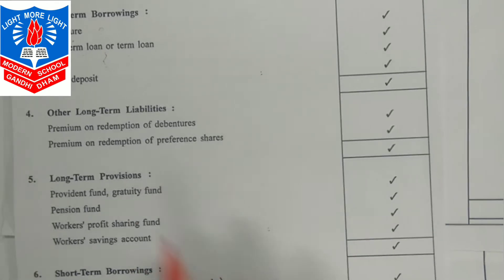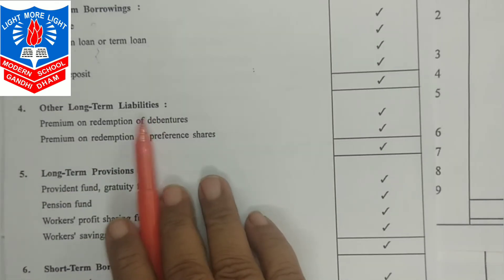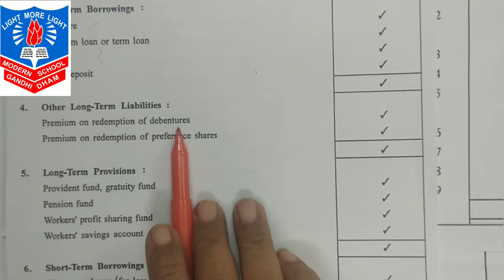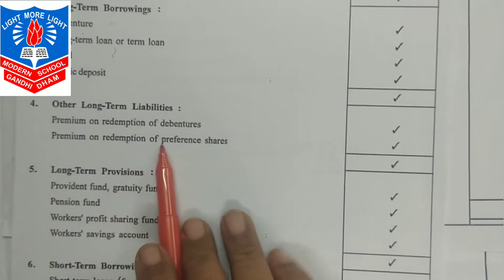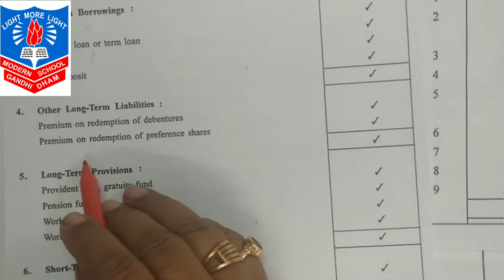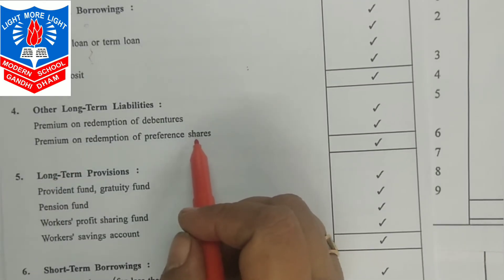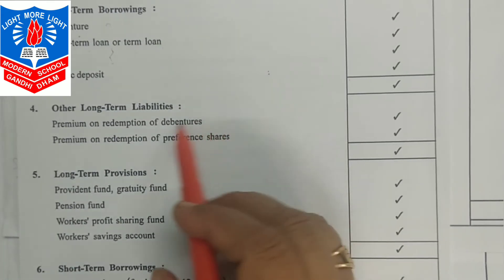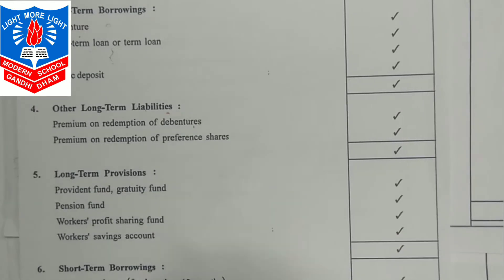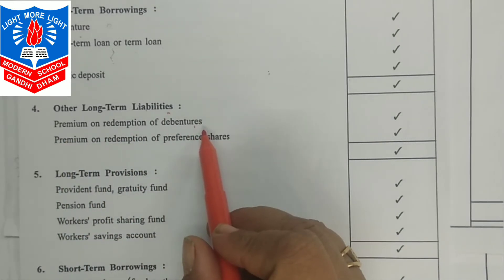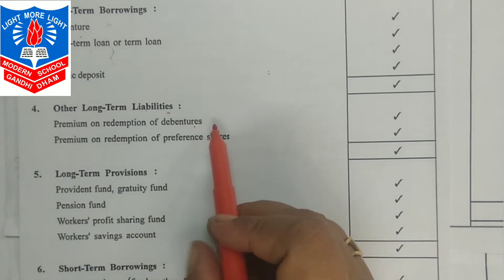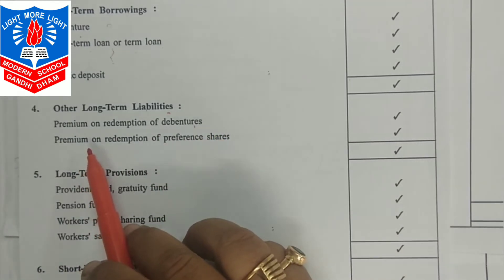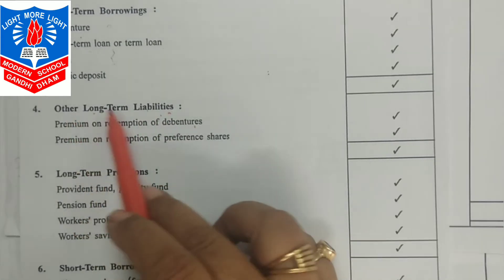Next is long-term liabilities — amounts still to be paid. This includes premium on redemption of debentures and premium on redemption of preference shares. These additional amounts we have to pay in future are our liabilities — reserved for when debentures and preference shares are redeemed.